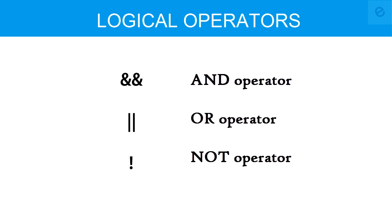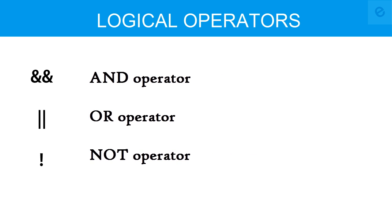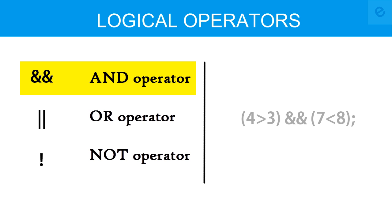First we would be understanding each of the following logical operators, and then we would be implementing or combining a program to understand them more easily. Let's start first with the AND operator, which is denoted by two ampersand signs.